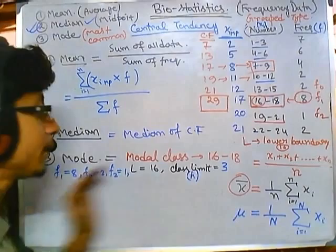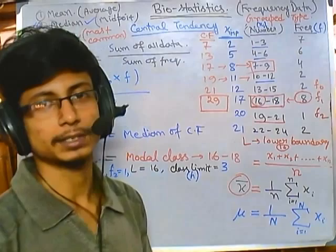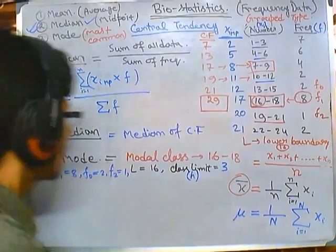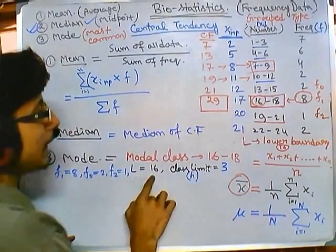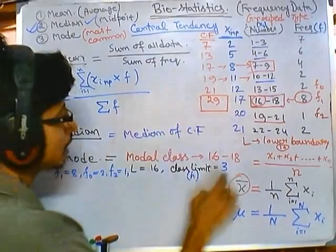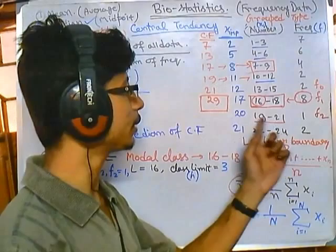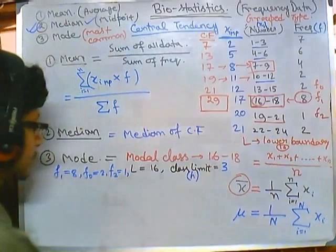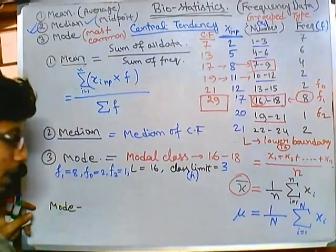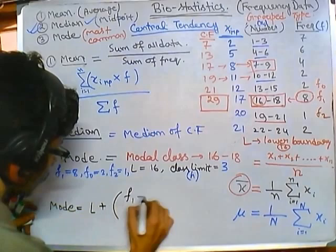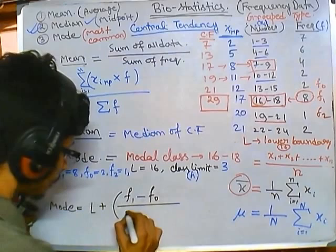These five parameters — f1, f0, f2, L, and h — are required to calculate the exact mode for grouped frequency data. The formula for the exact mode is: Mode = L + [(f1 minus f0) divided by (2f1 minus f0 minus f2)] multiplied by h.